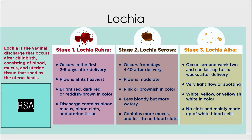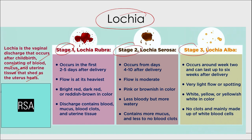A common question is: what is lochia? Lochia is the vaginal discharge that occurs after childbirth, consisting of blood, mucus, and uterine tissue shed as the uterus heals. There are 3 stages: lochia rubra, lochia serosa, and lochia alba respectively.